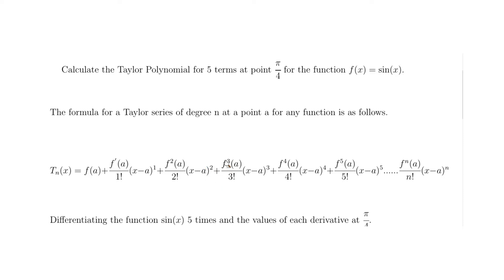You can see a pattern forming: the third derivative at π/4 over 3 factorial times (x − π/4) cubed, then the fourth derivative at π/4 divided by 4 factorial times (x − π/4) to the power of 4, and the fifth derivative at π/4 divided by 5 factorial times (x − π/4) to the power of 5.